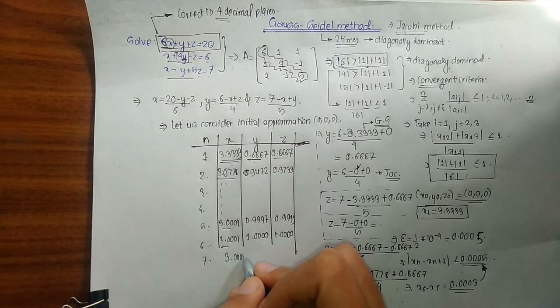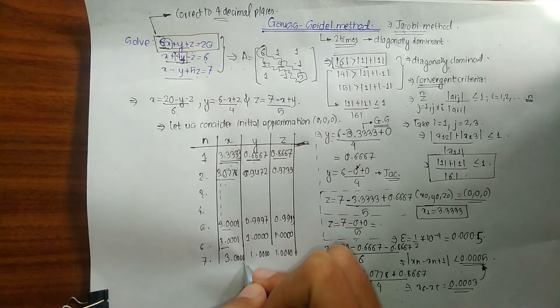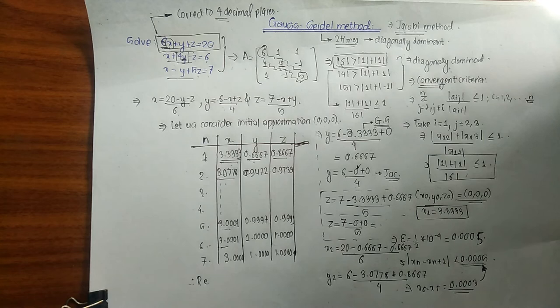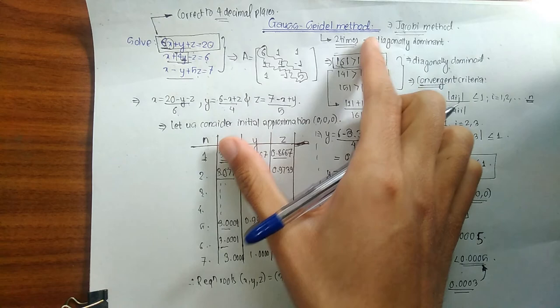Since |x₆ − x₅| = 0.0003, which is less than 0.005, we can stop the iteration here. Running one more iteration to the seventh gives x = 3.000, y = 1.000, z = 1.000. Therefore, the required roots are x = 3, y = 1, z = 1. In this way, using the Gauss-Seidel method you can solve any such equation. Hope you liked the video — if you have any queries, comment below.